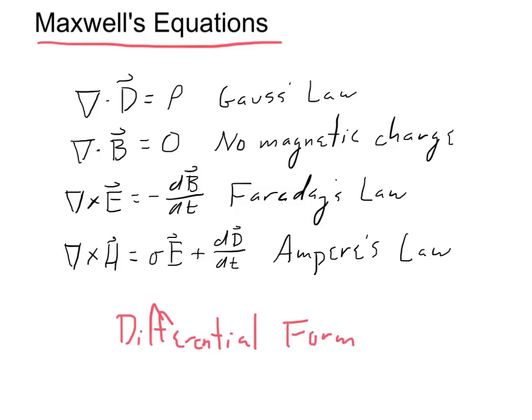In differential form, Maxwell's equations are: first, Gauss's law — the divergence of the electric flux is equal to the charge enclosed within any region, sources and sinks. Second, the divergence of the magnetic flux is equal to zero, which means there is no such thing as a magnetic charge. Third, the curl of the electric field is equal to the rate of change of the magnetic flux — this is Faraday's law. And fourth, Ampere's law: the curl of the magnetic field is equal to the conduction current plus the displacement current.